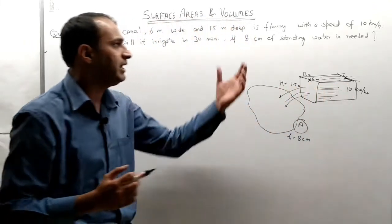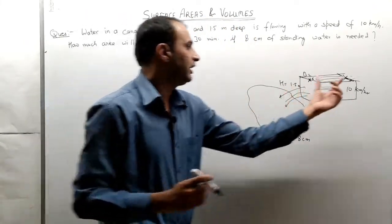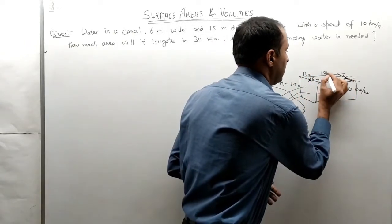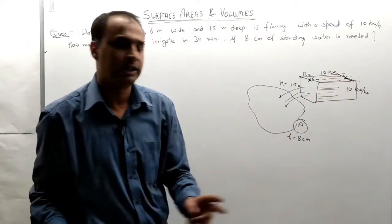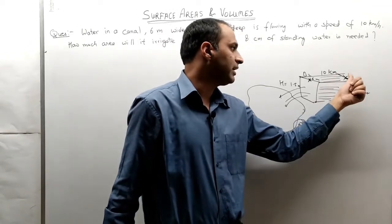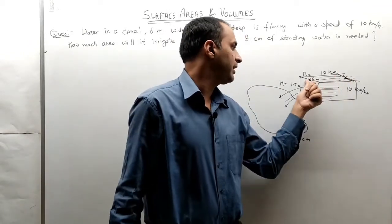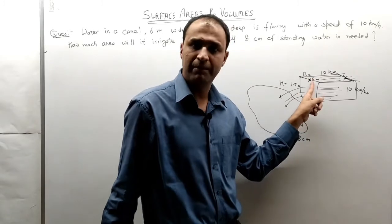Because the speed is 10 km per hour, how far does the water travel? The water particle starts here and moves to a certain position — so the water particle is at a distance corresponding to the speed.